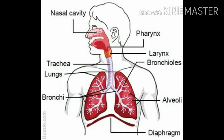The organs involved in the respiratory system are: nasal cavity, pharynx, larynx, trachea, lungs, bronchi, alveoli, and diaphragm.